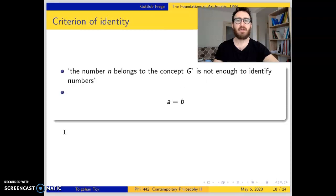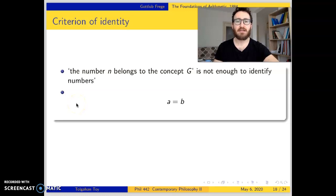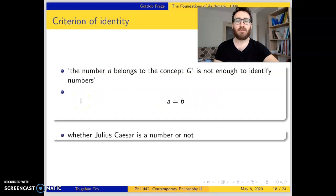But this approach is not enough to identify numbers. The approach that the number n belongs to a concept g is not able to decide whether that number is identical to another number. Even though we know that Julius Caesar or any other human being is not a number, this definition is not able to decide whether Julius Caesar is a number or not.